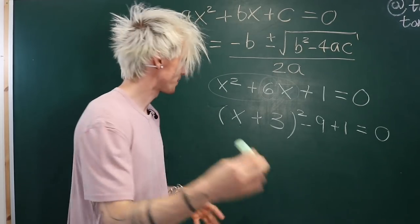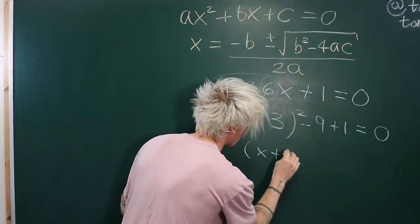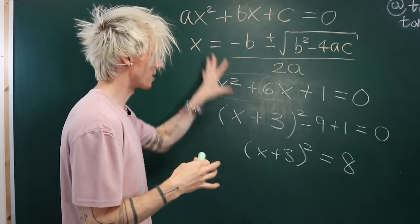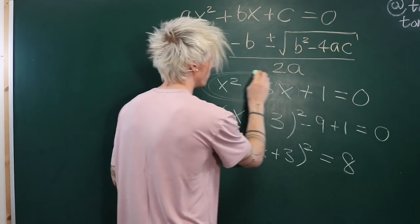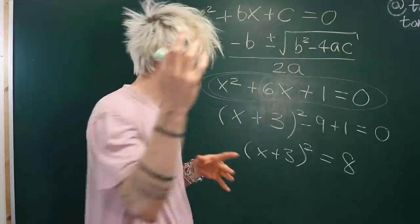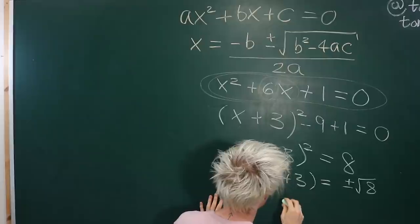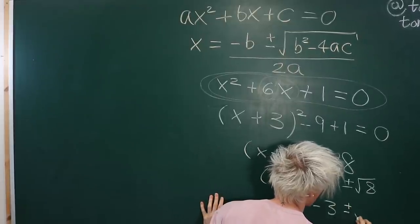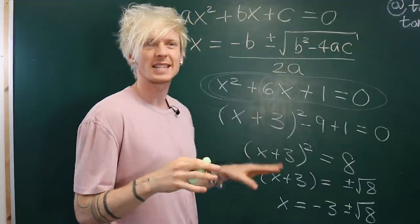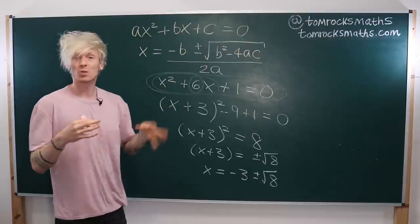This simplifies to −8, and adding 8 to both sides gives us (x + 3)² = 8. This is the advantage of completing the square — we've rewritten our full quadratic as something squared equal to a number. We square root both sides to get x + 3 = ±√8, which gives us x = −3 ± √8 as our two solutions to the original quadratic equation.